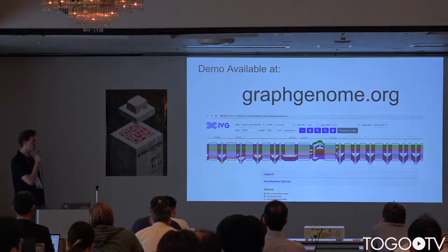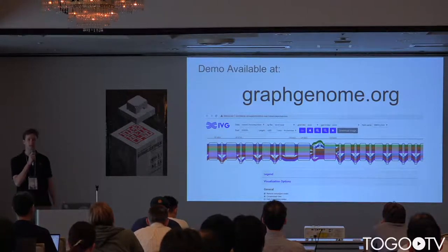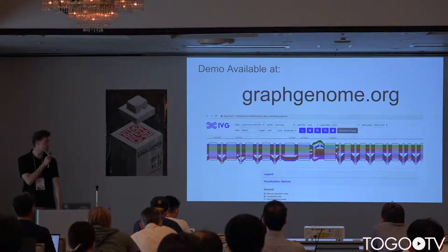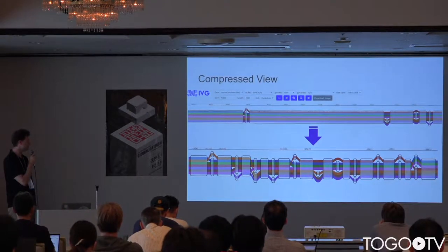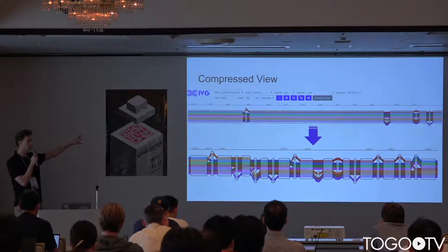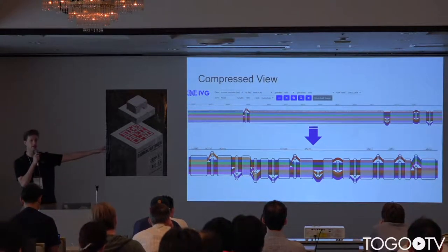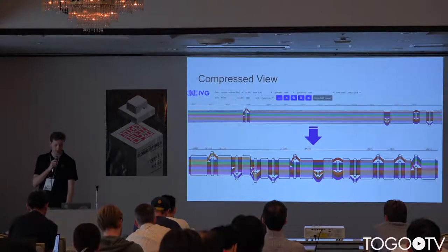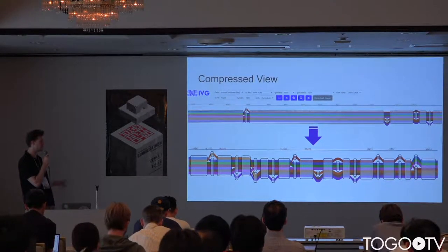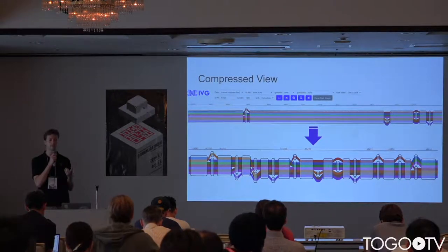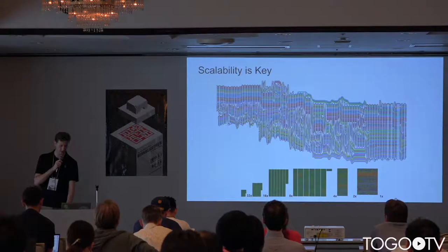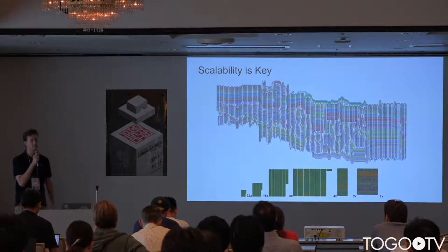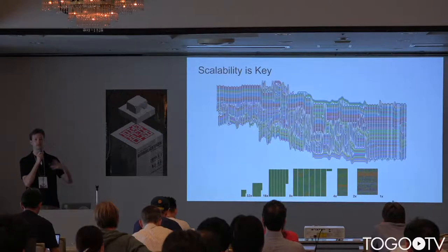Our starting paradigm for this is the sequence tube map, which is essentially a multiple sequence alignment. You can find us at graphgenome.org, though the demo's not up right now. The challenge is to look at that graph topology and see how nodes are interconnected. What we found is that if you just keep zooming out, after a while you can't distinguish any useful features, and as you add more individuals — up to 56 — the visualization becomes unstable.